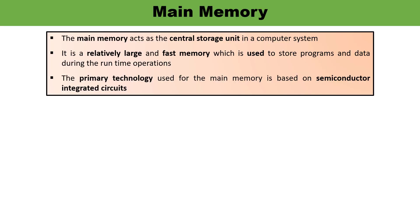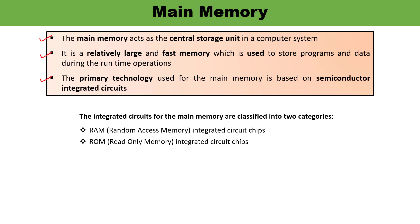To start with memory — any kind of system requires some storage units, whether for the short term or long term purpose, and computer systems take advantage of the memory systems they have. The main memory acts as the central storage unit in the computer. It is relatively large and very fast memory used to store programs and data during runtime operations. The primary technology used for main memory is based on semiconductor integrated circuits. These integrated circuits for main memory are classified into two categories: one is RAM, random access memory, and second is ROM, which is read-only memory.